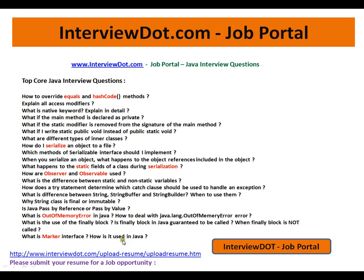In the next slide, we have equals and hashCode method — very, very important. When you override the equals method and if you don't override the hashCode method, what happens? And if you don't override the equals method but you have overridden hashCode, what will happen? Serialization and inner classes — very, very important. What will happen to static fields during the process of serialization? Observer and Observable, String, StringBuffer, StringBuider, Error, OutOfMemoryError, what is the use of finally block, what is a marker interface.